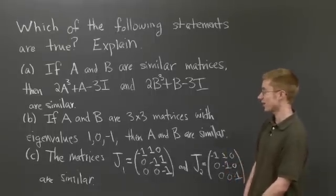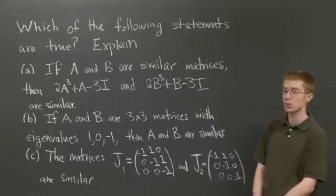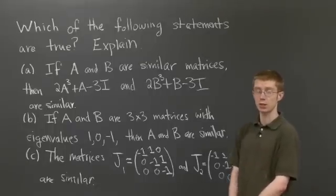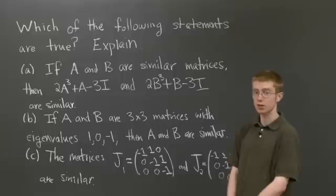The second question asks if A and B are 3 by 3 matrices with eigenvalues 1, 0, and negative 1, then they're similar.